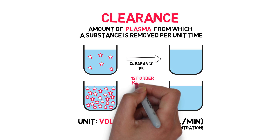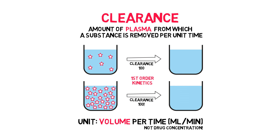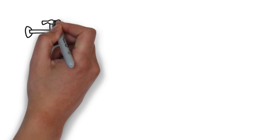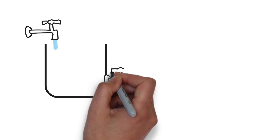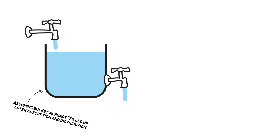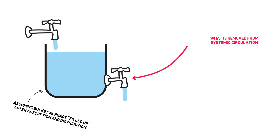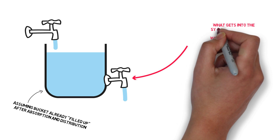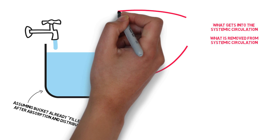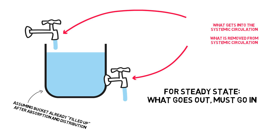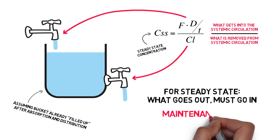This is what happens in what we call first-order kinetics. And since this applies to most drugs, we'll leave it at that for this video. So why is this important? Well, through absorption and distribution, we filled up our body, or bucket, with drug. Now we learn that the body will try to get rid of it through clearance. If we know the clearance, we know how much to give the patient to maintain certain plasma levels — what goes out must go in again. So clearance is important to calculate maintenance dose.